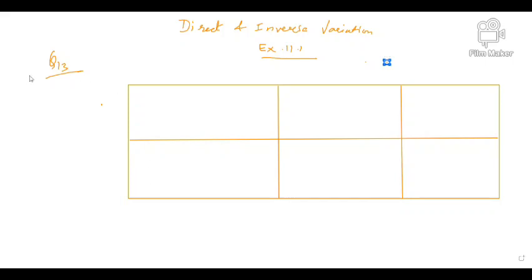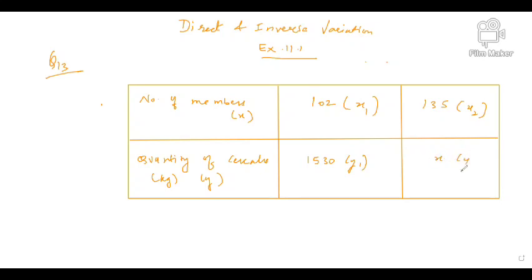First, what is the number of members? This quantity, we will assume x quantity and quantity of cereals. The number of members, we will assume x1, we will assume x1. And 135, we will assume x2. Then 1530, we will assume y1 and we will find out, we will assume y2. Let's see how we solve this.